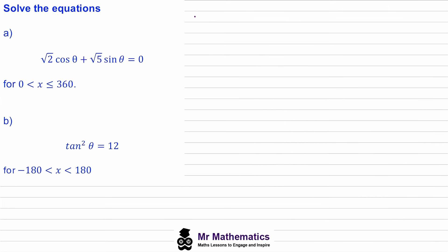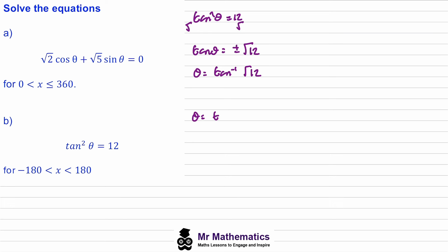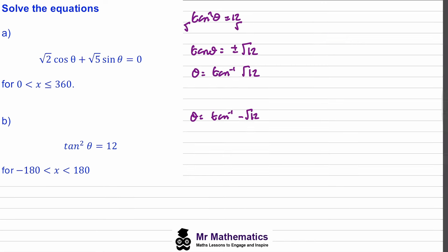Finally for question B, we're going to solve tan squared theta equals 12. We cancel out the squared by taking the square root of both sides, so tan theta will equal plus or minus the square root of 12. A common mistake here is to forget to include the negative root 12. We take the arc tan of both sides, so theta equals arc tan of root 12, and theta equals arc tan of negative root 12.